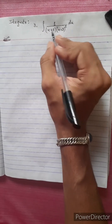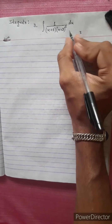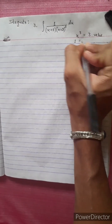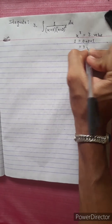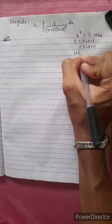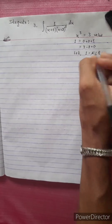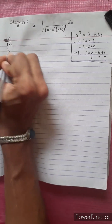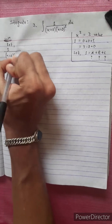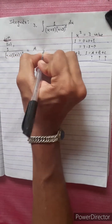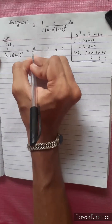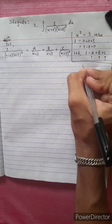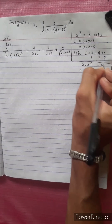X cubed, x squared, degree 3. We have 1 divided by x plus 2 times x plus 3 squared, which equals A over x plus 2, plus B over x plus 3, plus C over x plus 3 squared. The LCM is x plus 3 squared, which gives us a squared denominator term.